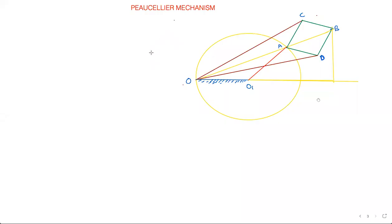Hello students, so this is the Peaucellier mechanism and it's an exact straight line motion mechanism. As we have seen earlier, we derived it based on a circle and chord of a circle. Here also we are going to derive in a similar fashion.